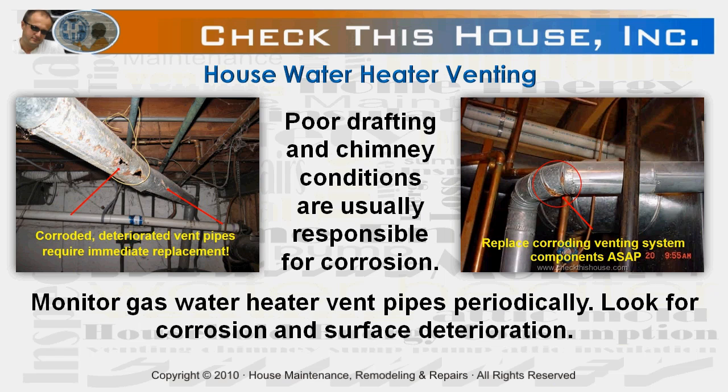The next step is the maintenance routine. You have to periodically monitor vent pipes for corrosion and deterioration. If you notice something, investigate. Draft problems, condition of the chimney, and inadequate amount of combustion air are usually responsible for those problems. Most common areas to look for corrosion are along the bottom portion of the pipes and on connector edges. Once it starts corroding, the vent pipe wall becomes very soft and might fall apart even under slight pressure. Corroding gas water heater vent pipes should be replaced as soon as possible to prevent exhaust fumes and carbon monoxide poisoning.